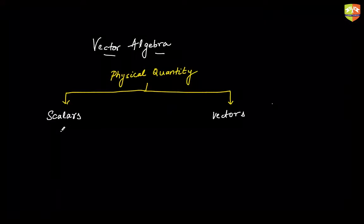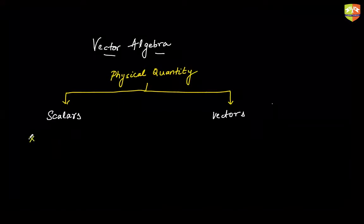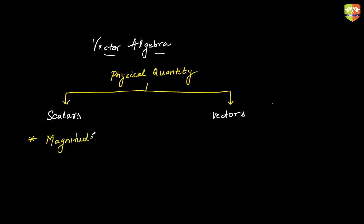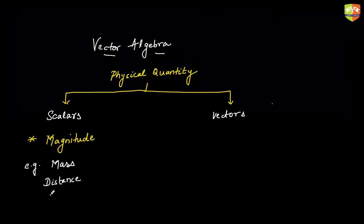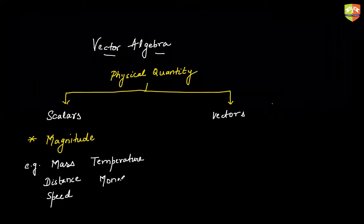How do you define a scalar quantity? Any physical quantity which can be represented only by stating its magnitude. Any magnitude is sufficient enough to state it. Examples include mass, distance, speed, temperature, money, etc.